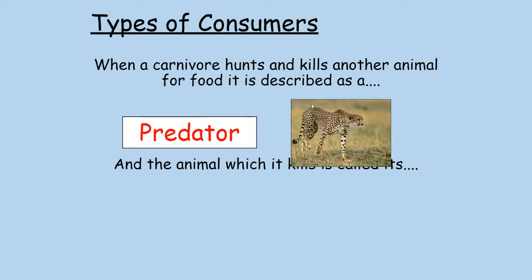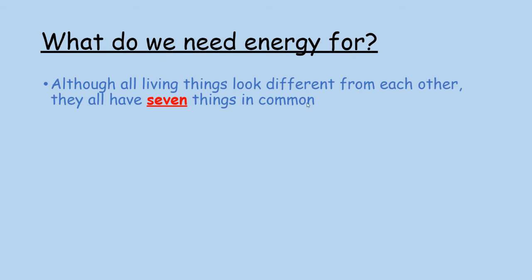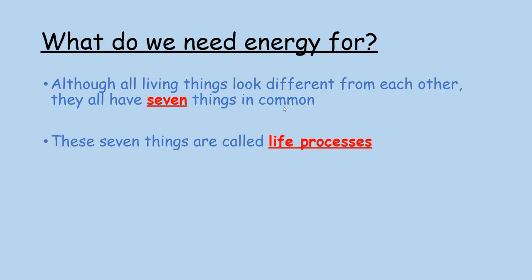When a carnivore hunts and kills another animal for food, we describe it as a predator, and the animal it kills is called the prey. Parasites introduce some interesting distinctions, but for our purposes: when something hunts and kills another animal for food it is a predator, and what it hunts and kills is the prey.